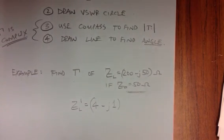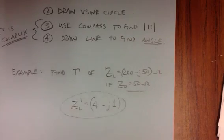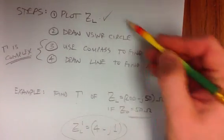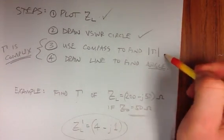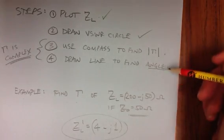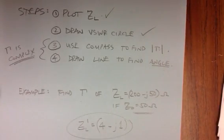So we plot 4 minus J1, then we draw the VSWR circle, and then we use our compass, I'll show you how to do that, and then we find the angle. Simple as that.